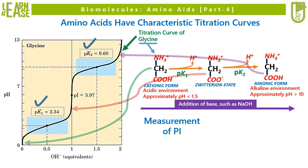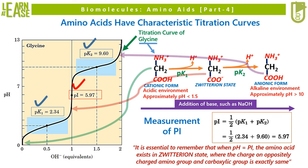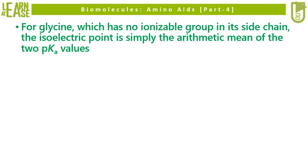Based on these pKa values, Pi — that is the isoelectric pH — can be calculated. Pi is the mean of the pKa values and is the pH at which the net charge on the amino acid is zero. For glycine, Pi is the mean of 2.3 and 9.6, which equals 5.97. So at pH 5.97 the net charge on glycine is zero. It is essential to remember that when pH equals Pi, the amino acid exists as a zwitterion where the charge on the oppositely charged amino group and carboxylic group is exactly the same. For glycine, which has no ionizable group in its side chain, the isoelectric point is simply the arithmetic mean of the two pKa values.